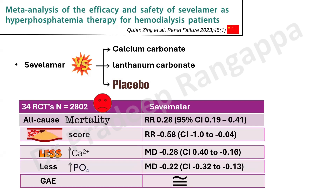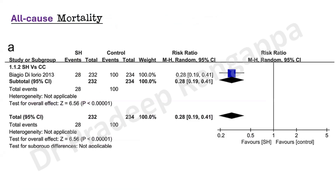What is striking for intensivists and any doctor is the mortality benefit and the significant reduction in vessel calcification, which is so important in CKD patients. Gastrointestinal adverse events were similar between Sevelamer and other agents. In brief: Sevelamer binds to phosphorus, predominantly causes GI side effects, dosage is 800 to 1600 mg titrated to maintain phosphorus between 3.5 to 5.5, must be taken with meals, and has a few notable drug interactions. The forest plot of all-cause mortality showed a very significant p-value favoring Sevelamer over calcium carbonate or lanthanum carbonate.